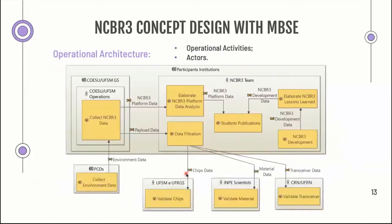To complete this, we have an operational architecture that is the most complete module view, assembling the first two modules shown before and showing the capacity building that is going to be the focus of this work. The collect Nanosat CBR 3 data module is the only one being developed; the other ones have already been developed and we're just going to use them. This completes the operational analysis phase — the first layer.